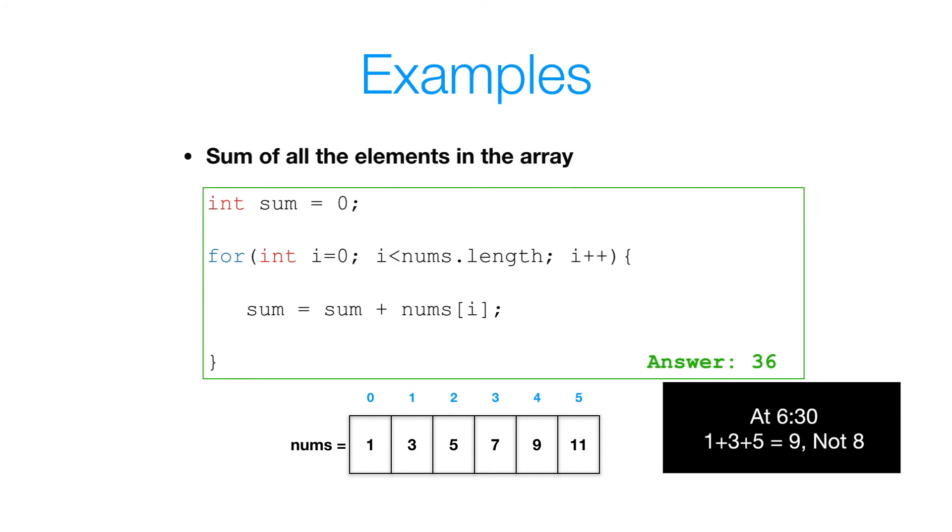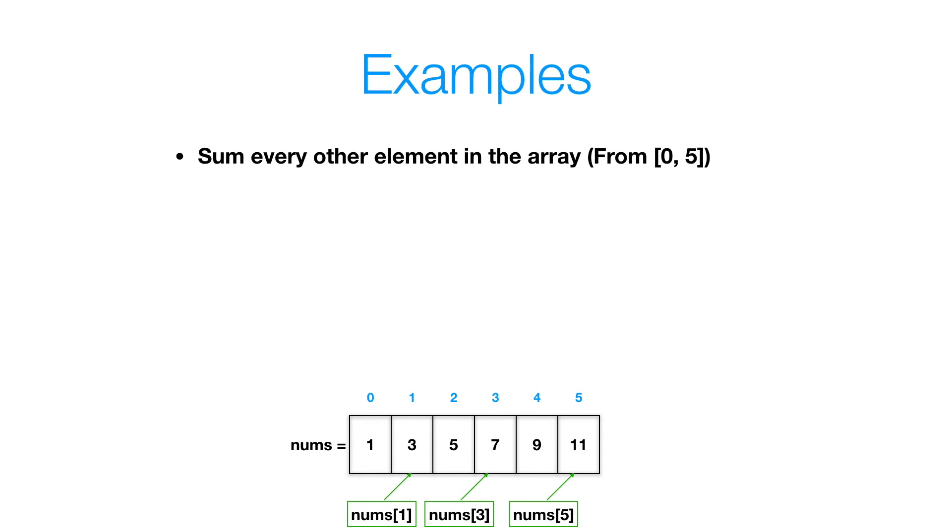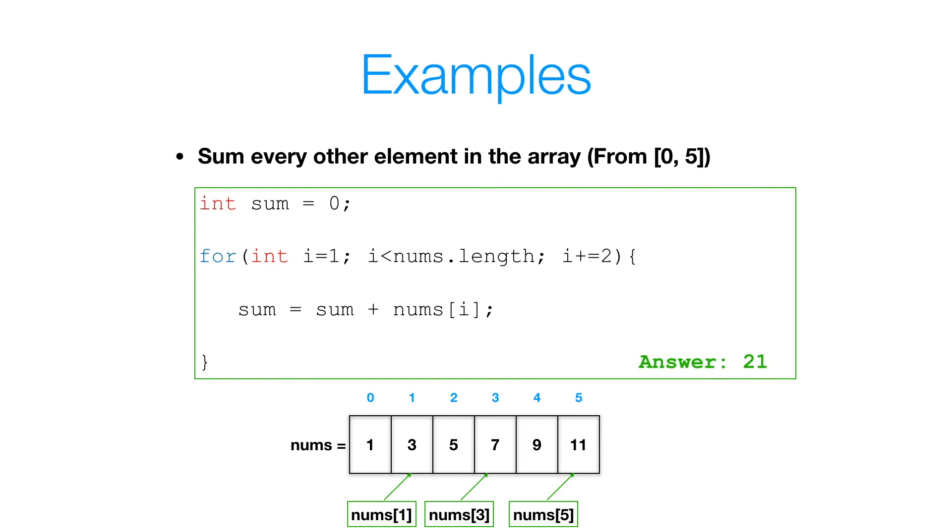So let's try to tackle a little bit more challenging of an example. I want you guys to sum from element zero to five every other element. So in this case, I want you to sum nums of one plus nums of three plus nums of five, and return that value. So pause the video, and when you're ready to hear the solution, press play. So here's how I would solve it. The first thing I would do is create a variable sum to keep track of the current sum. And inside of a for loop, I'm summing each index, but I'm starting at index one, incrementing every two indices. So I start from one, then go to three, then go to five, and so on and so forth.